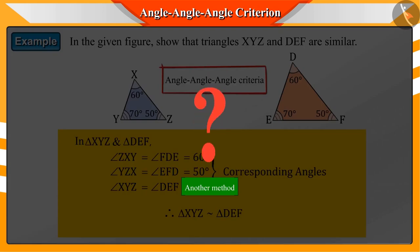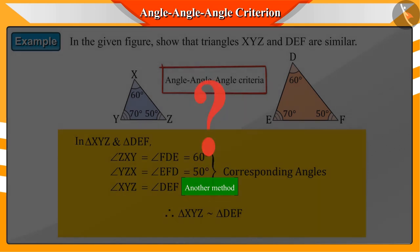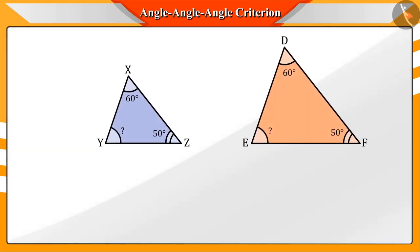Can we solve this by any other method? If we observe this example, then we'll see that in two triangles, if any two corresponding angles are the same, then their third corresponding angle would also be the same.